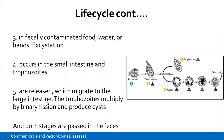These trophozoites are released, migrate to the large intestines, and continue multiplying by binary fission, producing more trophozoites. At this stage, when the trophozoites start penetrating the walls of the intestines, they cause damage. There can be some bleeding and inflammation at that site, and that is where you have other symptoms like abdominal pain.